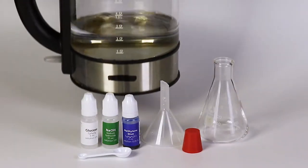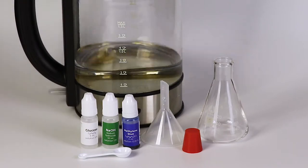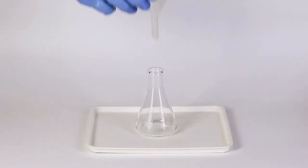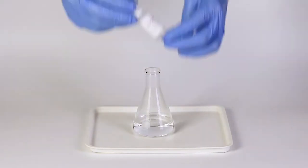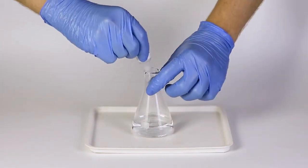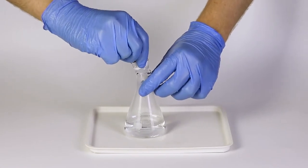Prepare boiling water in advance. Put the funnel into the flask and add 40 milliliters of hot water. Remove the funnel and pour the entire bottle of glucose solution into the flask.